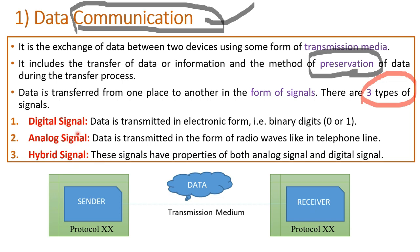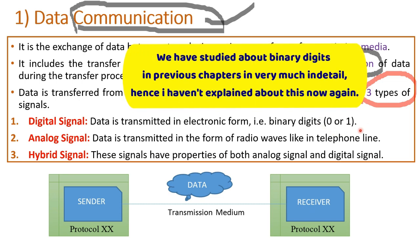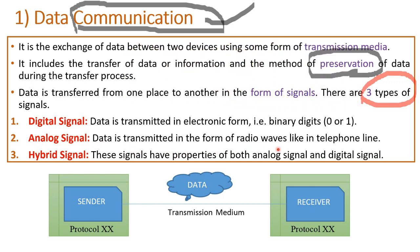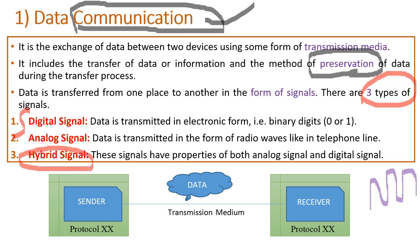The very first form is the digital signal. Digital signal — here the data is transmitted in electronic form, that is in binary digits, zeros and ones. The second is the analog signal, where data is transferred in the form of radio waves, like in the telephone line — these are sine waves or electromagnetic waves. The last type is the hybrid signal, which is a combination of digital as well as analog.